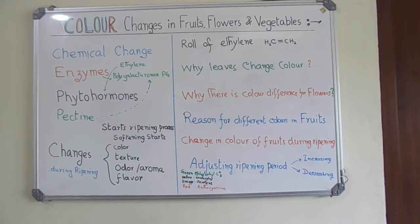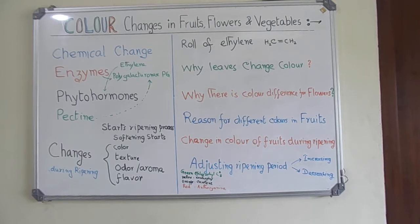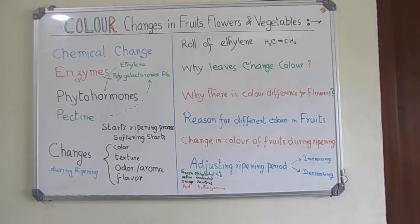Similarly, we can change plant pigments by adjusting the pH of the medium from acidic to alkaline. If the same flower with stem is put in different solutions ranging from pH 1 to 14, you can see varying color changes. Carotenoids give yellow and orange color, anthocyanins give red color, and chlorophyll gives green color.